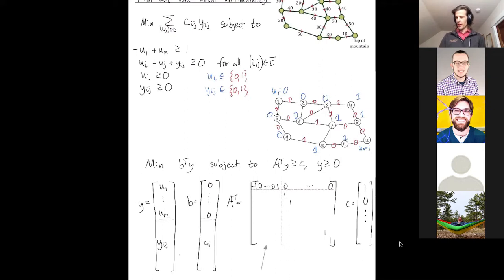Subject to A transpose y. A transpose y is at least c. Okay, so here's A transpose y, this matrix. When I multiply A transpose by y, the u variables, the variables on the vertices, get multiplied by the left half and the yij variables, the variables on the edges, get multiplied by the second half. So let's sort of denote that. I'll go ahead and label this is my ui entries and my yij entries.